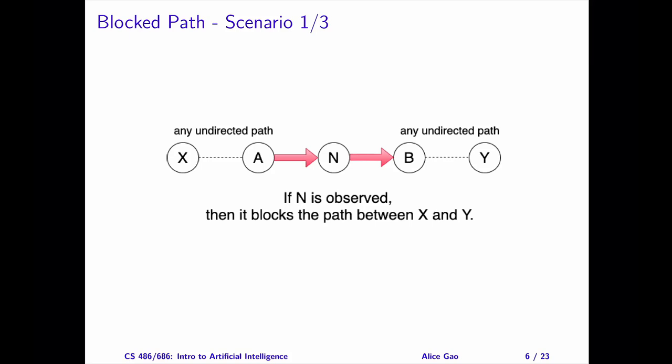Scenario number one: The two arrows around N point in the same direction, forming a chain around N. I drew the arrows pointing to the right, but it's fine if they point to the left as well. In this scenario, if N is observed, then N blocks the path between X and Y.